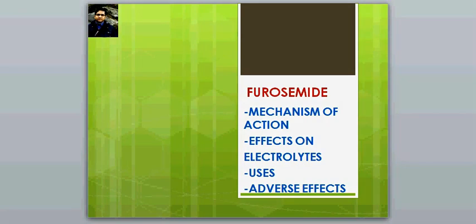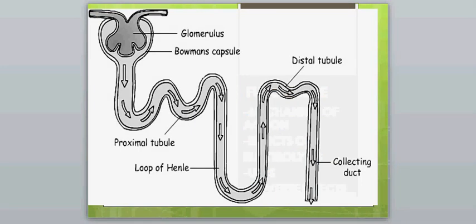In the mechanism of action, before starting I want to briefly describe the different parts of the nephron. The first part is the glomerulus, which leads to the proximal convoluted tubules, then the loop of Henle, then the distal tubule, and finally the collecting duct. Furosemide is a loop diuretic, so by the name it acts on the loop of Henle.